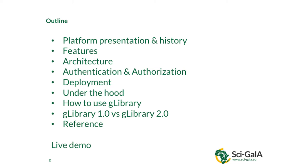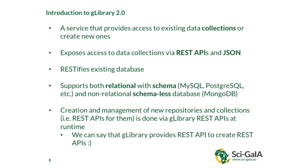We're going to see together how G-Library works and how it can be used for several use cases. So what is G-Library? Probably during the last day, you have seen that we have a common pattern we are using for developing our systems: REST APIs. G-Library is a platform to build REST APIs over datasets — datasets that can be already existing data collections, or it's able to create new data collections. It exposes REST APIs over data collections using JSON format.